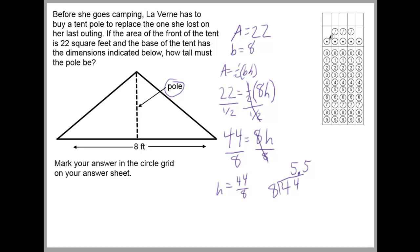Before you put that in for your answer, you could go back and plug it into the formula and make sure 22 equals one half of 8 times 5.5. You could do that on your calculator quickly: 8 times 5.5 equals 44, divided by 2 equals 22. You could do that if you have time, or just see if it makes sense. Does it make sense that this tent is 8 feet wide and 5.5 feet high? Yes, that is the height of a lot of tents, so it's a reasonable answer. So you put in 5.5.